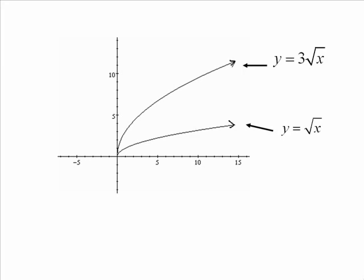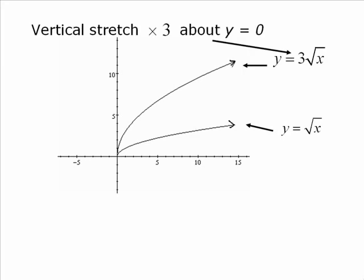So you can see that this 3 square root of x has been pulled away from the x-axis. So we have a vertical stretch by a factor of 3 about y equals zero. And that's what that 3 did.